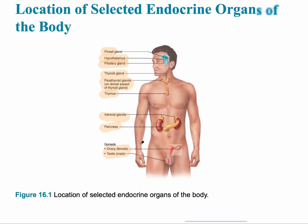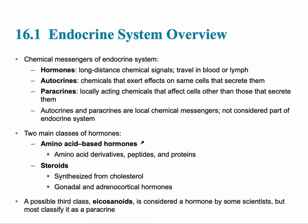Hormones are defined as long-distance chemical signals. Autocrines — from the prefix 'auto' — are chemicals a cell releases that affect itself. Paracrines, similar to 'parallel,' release chemicals that affect nearby cells. Autocrines and paracrines are local chemical messengers, whereas hormones release chemicals that affect glands all throughout the body and travel long distances.